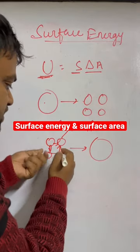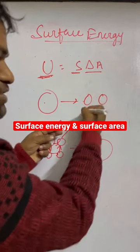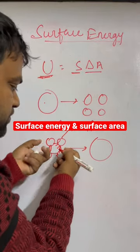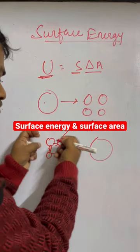So surface energy will decrease, that means in this process when they will merge, the energy will release. So it will be easier to merge the droplets.